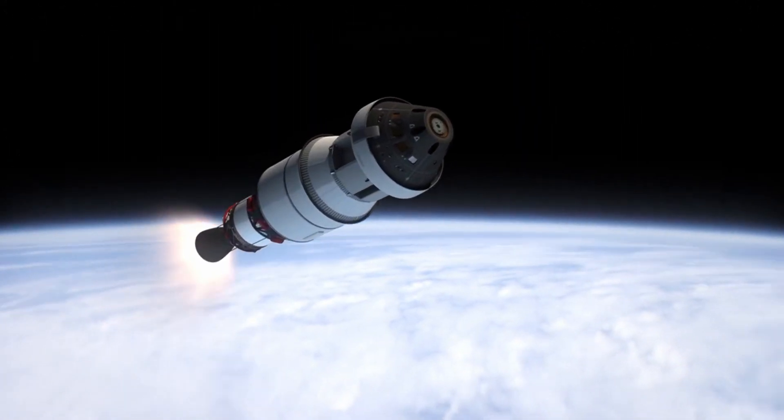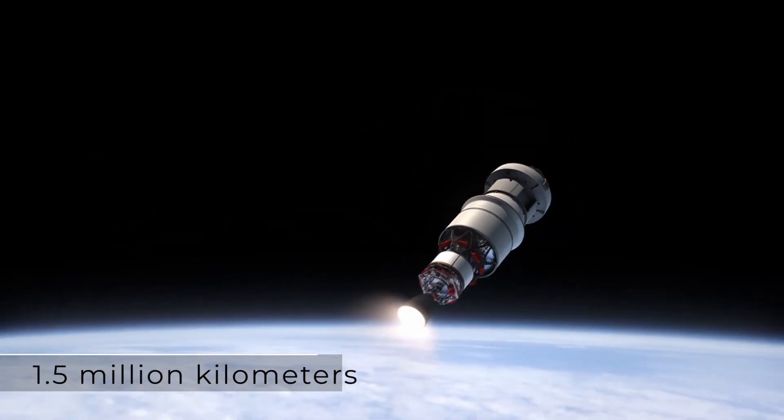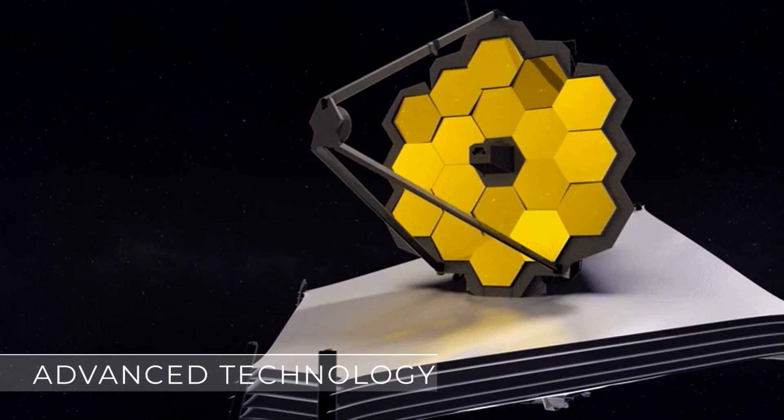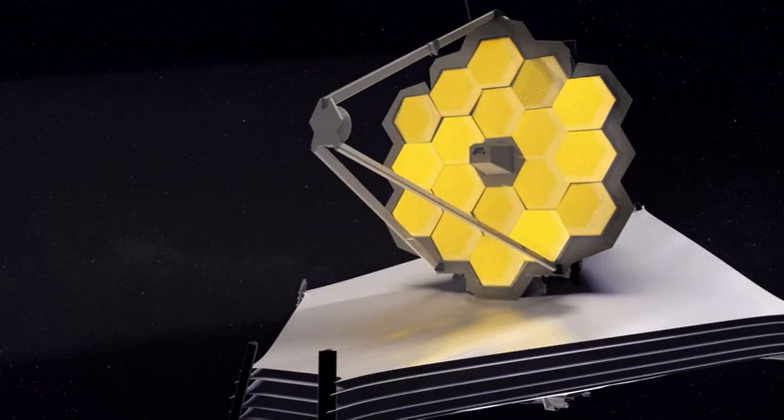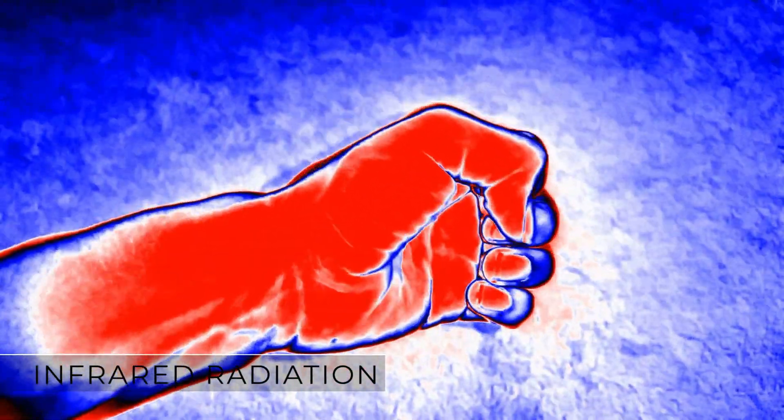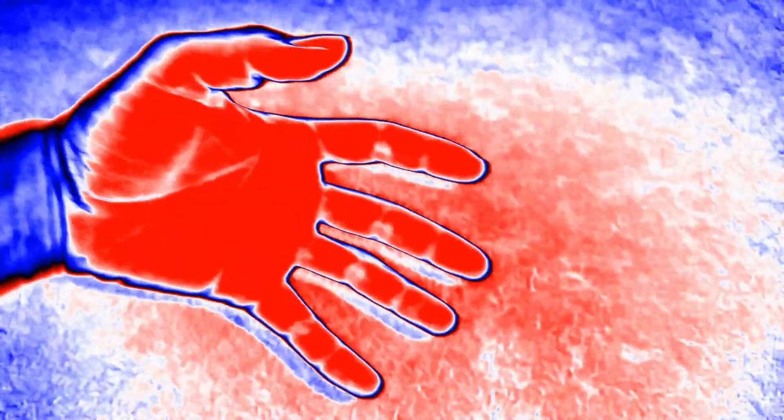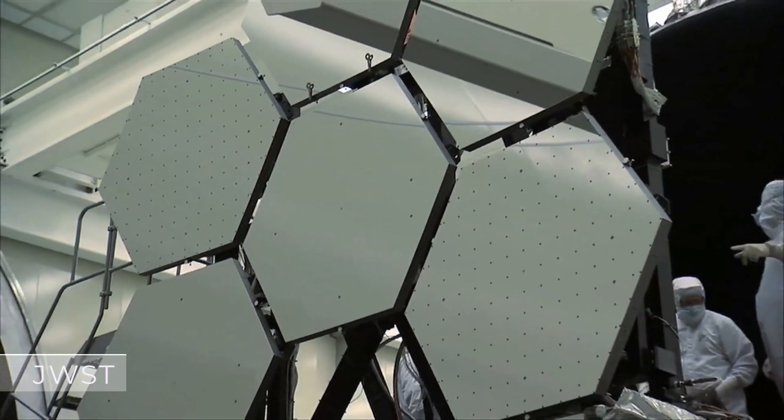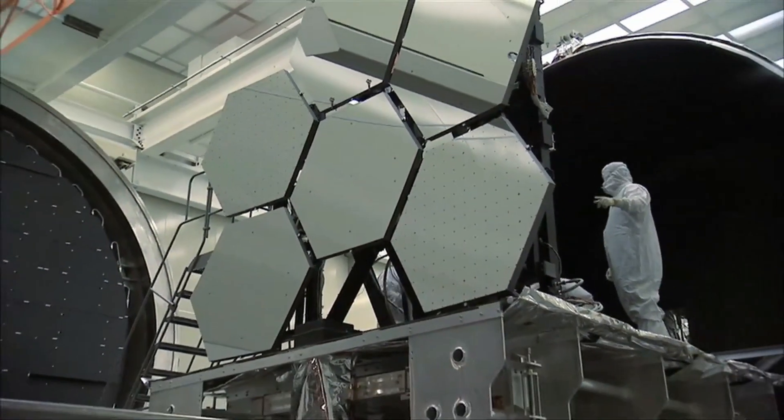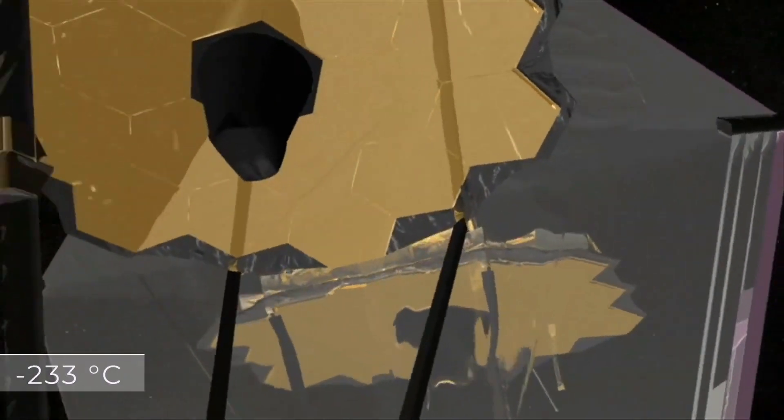The James Webb Space Telescope, located 1.5 million kilometers from Earth, uses advanced technology to capture light in the infrared spectrum invisible to the human eye. It is interesting to note that, in order for there to be no interference from infrared radiation emitted by itself, by the Earth, by the Moon, or by the Sun, the JWST had to be manufactured to withstand very low temperatures, operating at a temperature of negative 233 Celsius.